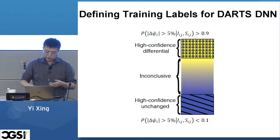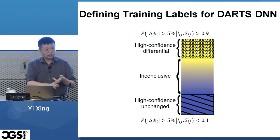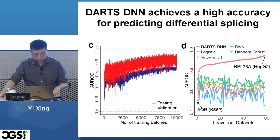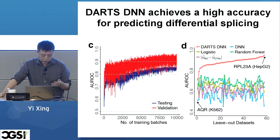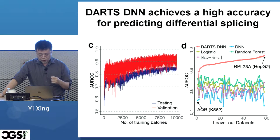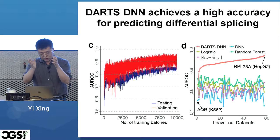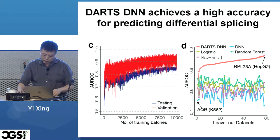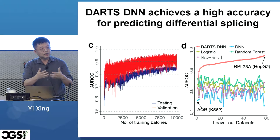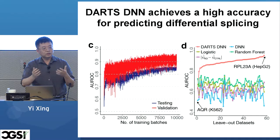With the training data and DNN architecture, we trained the DARTS deep neural network. As training progresses, performance increases, reaching an area under the curve of about 0.85 in cross-validation. We then applied the trained DARTS DNN and various baseline measures to the held-out datasets — the RBP knockdown experiments never used in training — and the DARTS DNN predicts those leave-out datasets quite well.